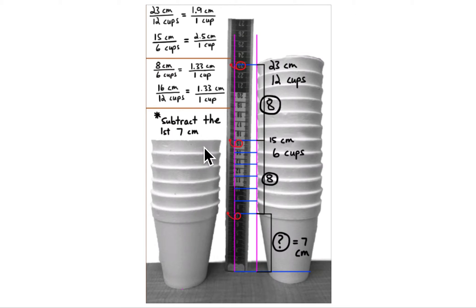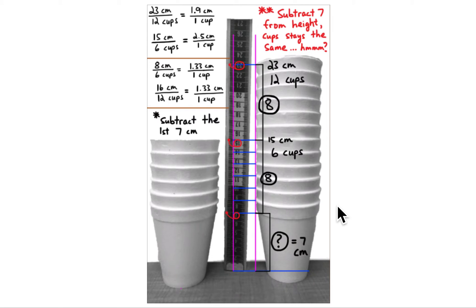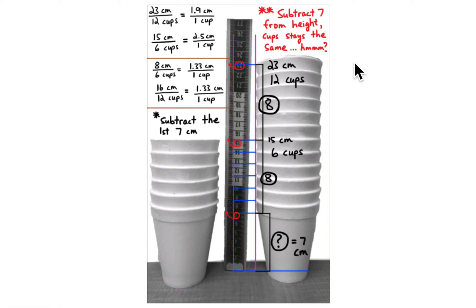Remember to subtract the first seven centimeters. Get rid of those seven centimeters, and then you can treat the rest as if it's a proportional relationship. Notice the number of cups stays the same — we've seen this before. This is where the slope triangle is resting against the y-axis, so the x-coordinate doesn't change. The horizontal units are the x-coordinate — six or 12 cups. But for the vertical distance, you must subtract the seven centimeters from the first cup.